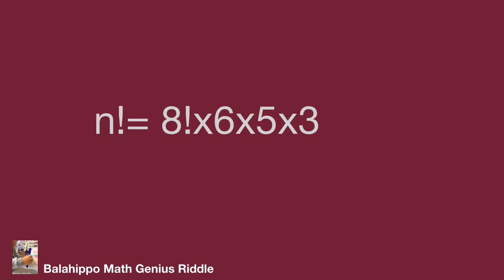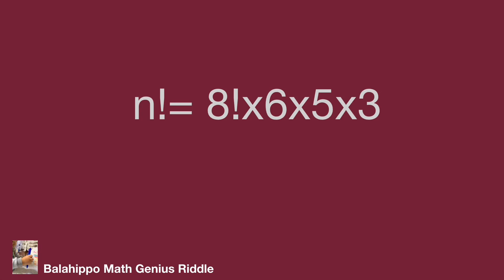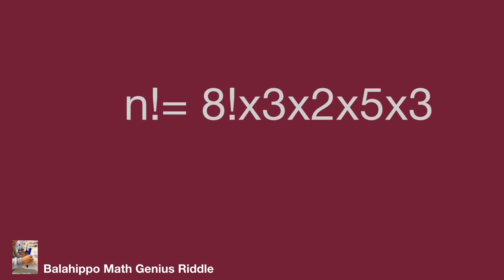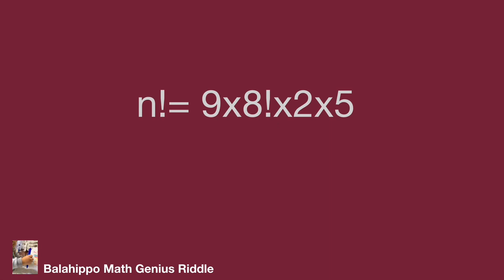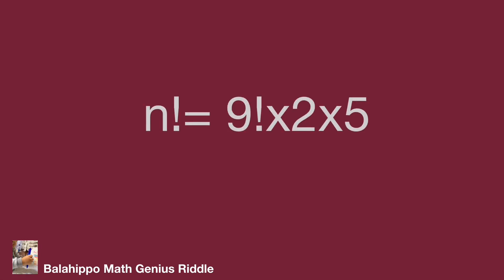Next, to generate 9 factorial from 8 factorial, we need to multiply 9 by 8 factorial. We check the right side of the equation to find a 9. We find the number 6, and since 6 equals 3 times 2, we rewrite: n factorial equals 8 factorial times 3 times 2 times 5 times 3. Then 3 times 3 equals 9, so we adjust the sequence: n factorial equals 9 times 8 factorial times 2 times 5. Since 9 times 8 factorial equals 9 factorial, we get n factorial equals 9 factorial times 2 times 5.